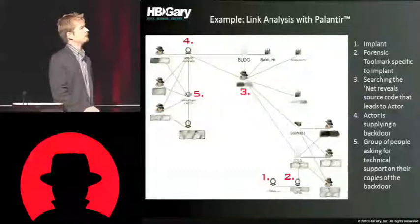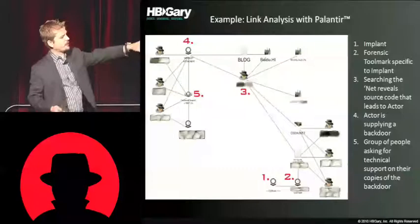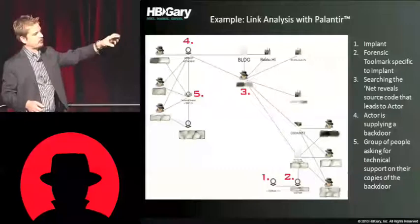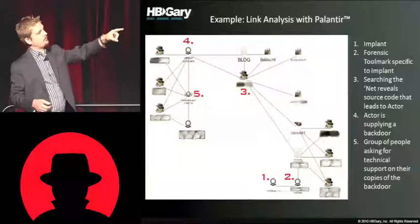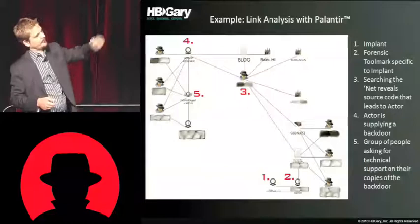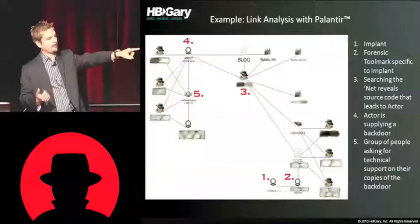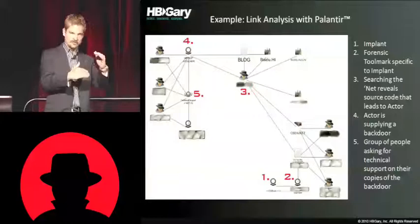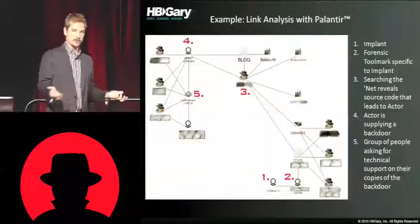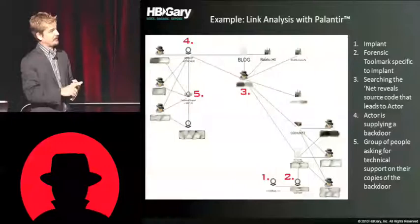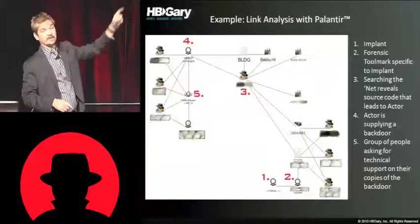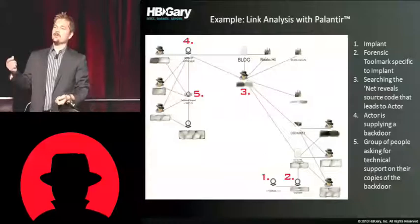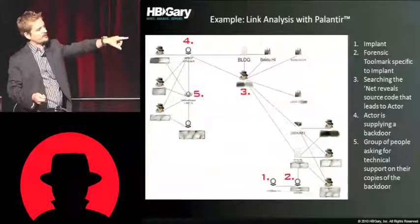We use Palantir at HBGary for link analysis. At number one is a source code artifact found in the Aurora dropper. We followed that to number two where we found a forensic tool mark, and then searching the net led us to number three — a person who posted source code in incomplete form that contained that tool mark. That means you couldn't have cut and pasted it to make that dropper; this person only put a portion of it on there. You can't get better than this: going from a forensic tool mark to the developer to the users of the malware itself.